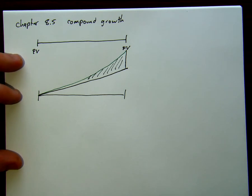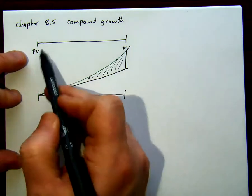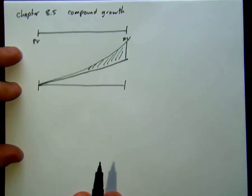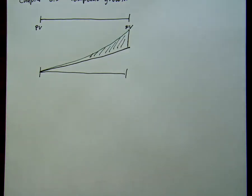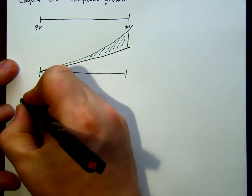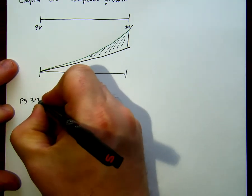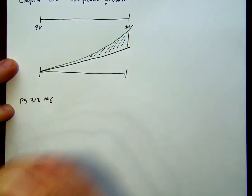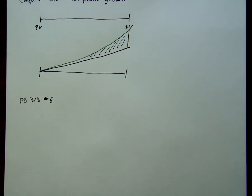Compound growth is basically how do we determine what a future value is based on a present value when there is growth and nothing else. So we'll do page 313, number 6. It says, an investor's choice between rates of 5.4% compounded quarterly and 5.5% compounded annually for a six-year GIC. Which should we choose?